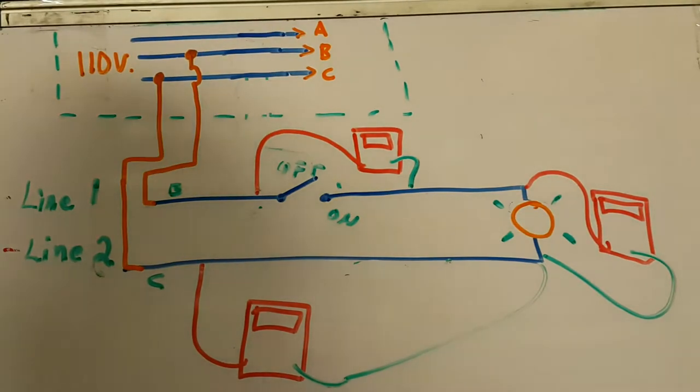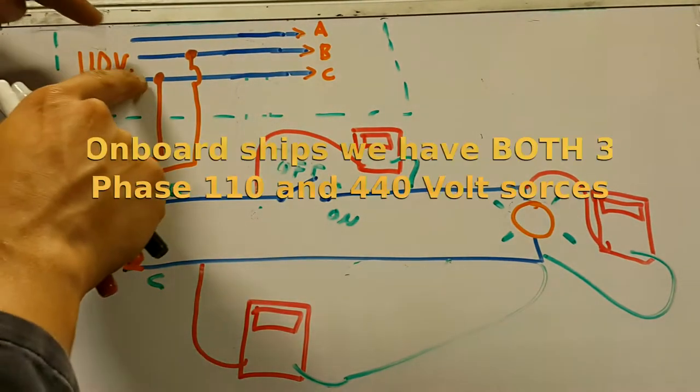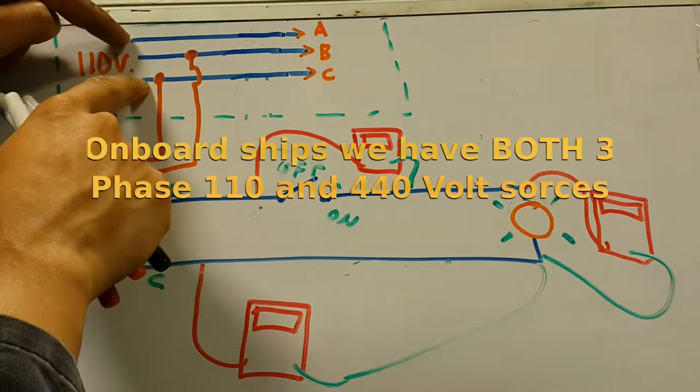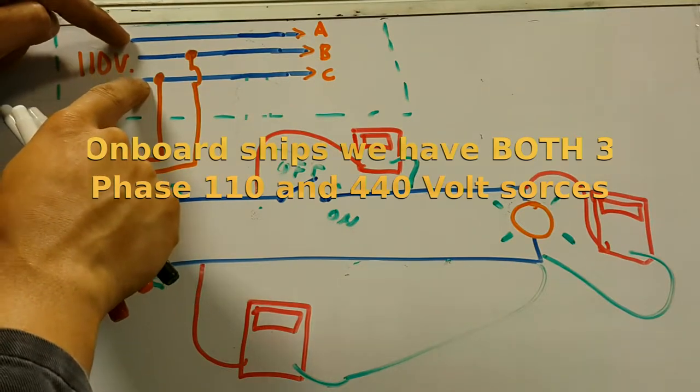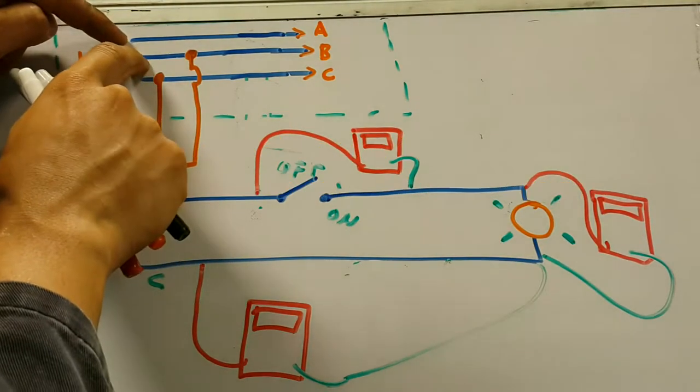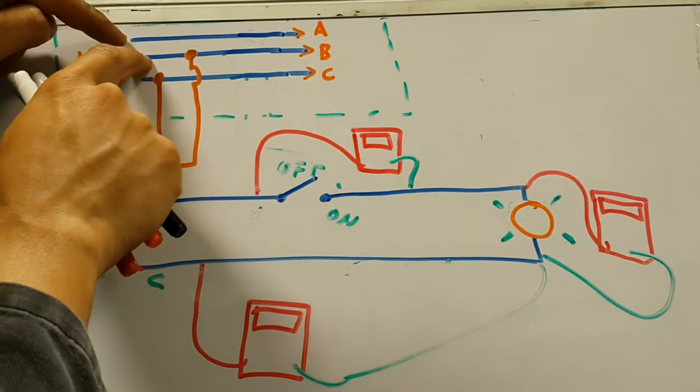But for right now, understand that if I want to get 110 volts, I can just go from any phase over here. A to C and I get 110 volts, or B to A and I get 110 volts.